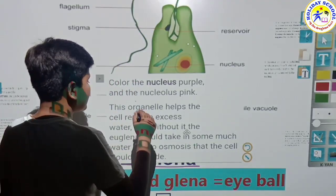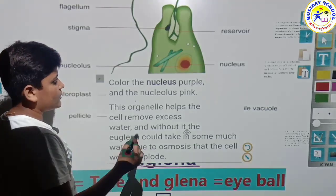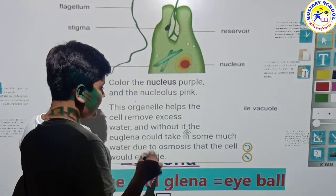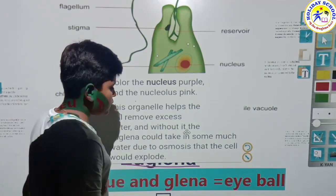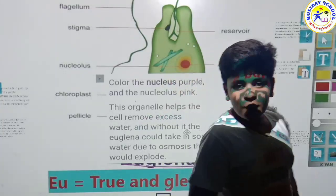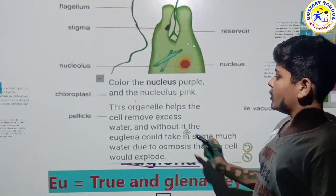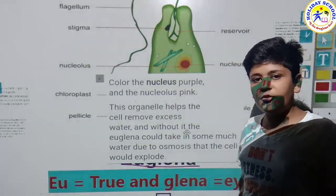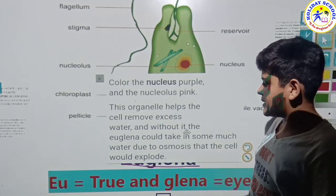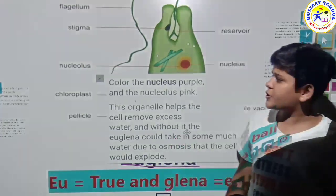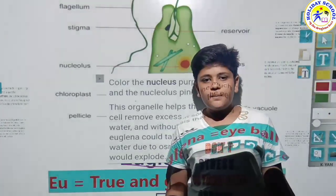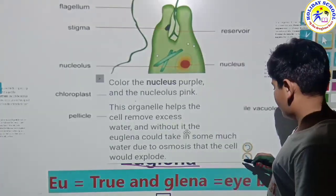This organ helps the cell remove excessive water. Without the Euglena's contractile vacuole, the cell could absorb so much water due to osmosis that it would explode. The nucleus works to throw out the excessive water, and if this vacuole is not there, the cell may explode due to excessive water.